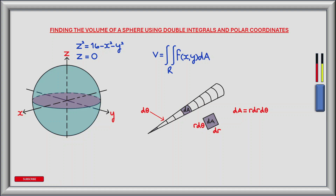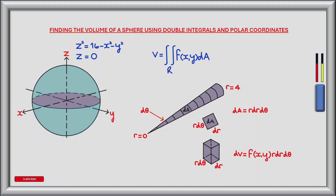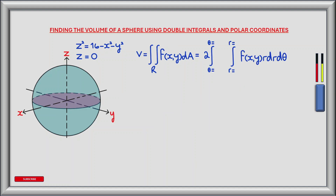To find the total area of the sector we integrate or sum in the r direction. When we integrate in the r direction we begin at the origin of the circle where r equals 0 and travel to the boundary where r equals 4. Multiplying dA by the height function f of x,y gives an infinitesimally small piece of volume dV, which is the height function f of x,y multiplied by r dr d theta. The lower limit of the inner integral is r equals 0 and the upper limit is r equals 4.